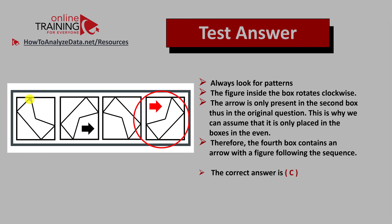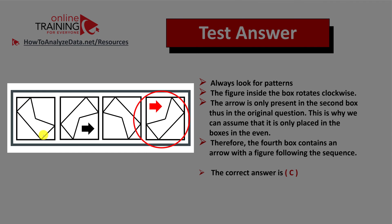What you see is that the figure inside rotates clockwise. If you look at the corner of the shape, you will see that the corner was on the left side of the square. Now the same corner touches the top line of the square. Then in the third box, it touches the right line of the square. Which means you can logically assume that in the fourth box, it will be touching the bottom line.